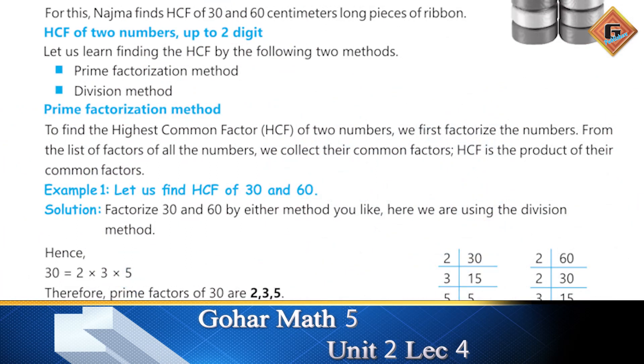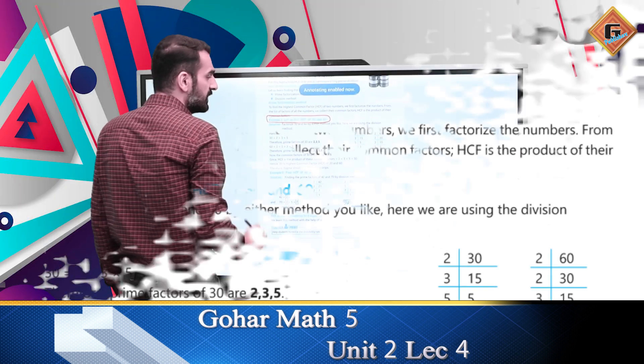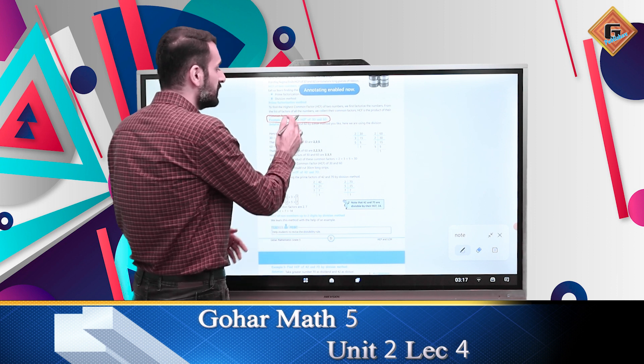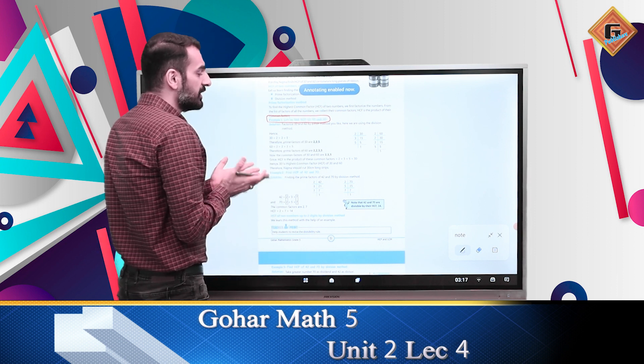Let us find Example 1: Let us find the HCF of 30 and 60. We have to factorize 30 and 60 by any method you like. Here we are using the division method. We have to show you 30 prime factors and 60 prime factors.